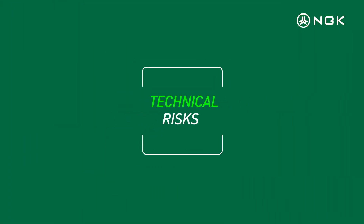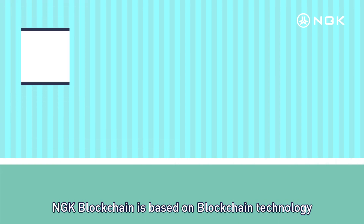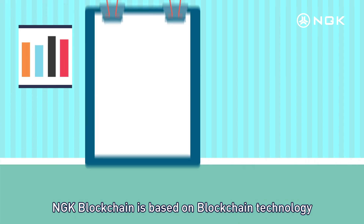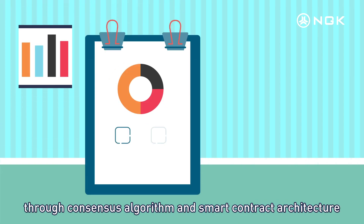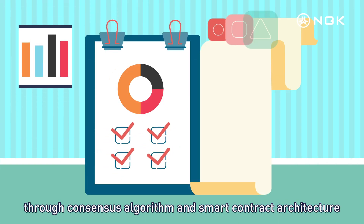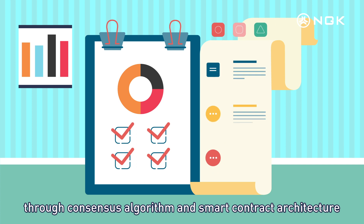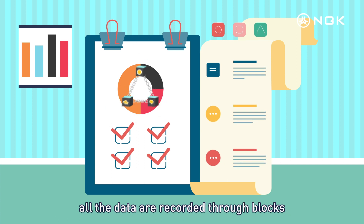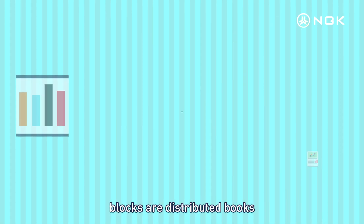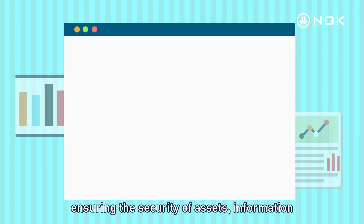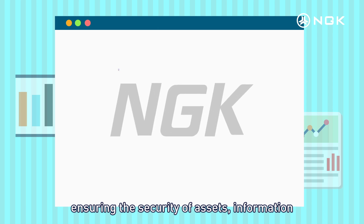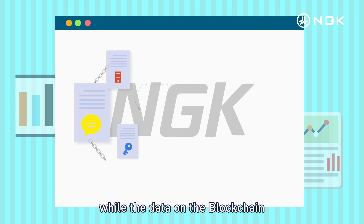Technical Risks. NGK blockchain is based on blockchain technology, through consensus algorithms and smart contract architecture. All data are recorded through blocks, which are distributed ledgers ensuring the security of assets, information, and keys on the chain, while the data on the blockchain is traceable and non-tamperable.